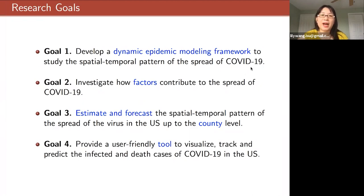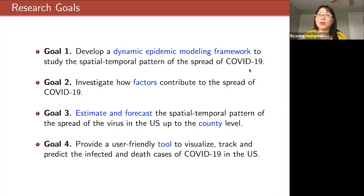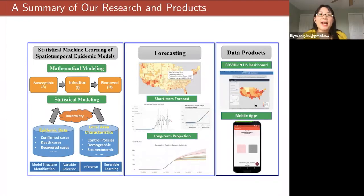Here on the screen you can see our research goals. Number one, we would like to develop a dynamic epidemic modeling framework to study the spatial-temporal pattern of the spread of COVID-19. We also want to investigate how factors contribute to the spread, and the third goal is to estimate and forecast the spatial-temporal pattern of spread in the United States down to the local county level. Finally, we want to provide a user-friendly tool to visualize, track, and predict infected and death cases.